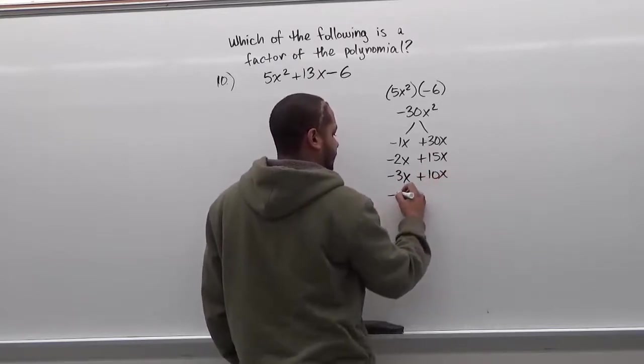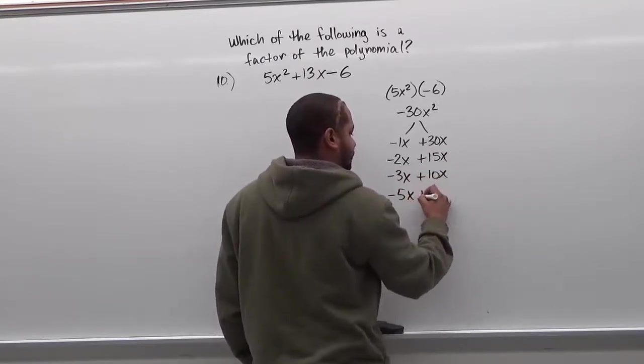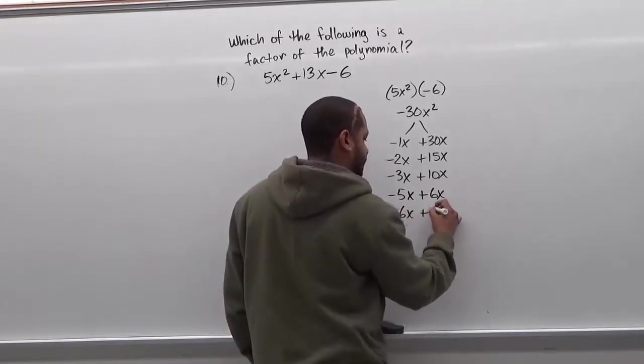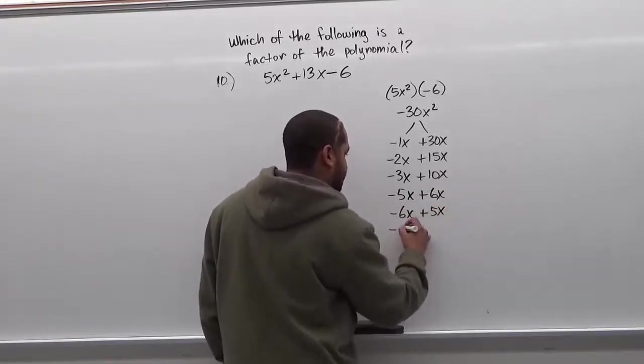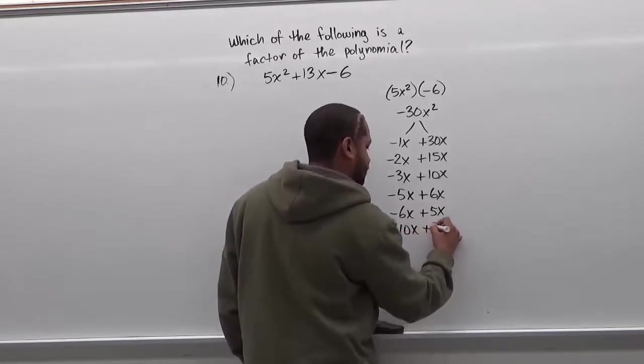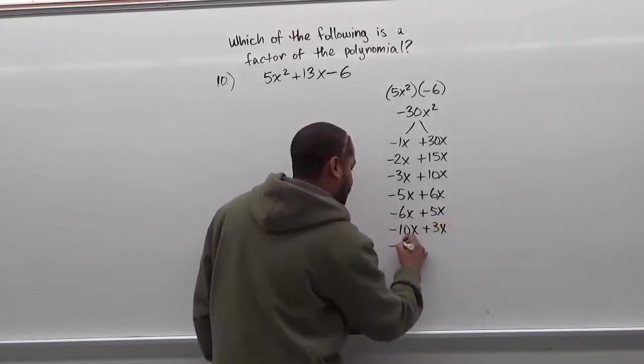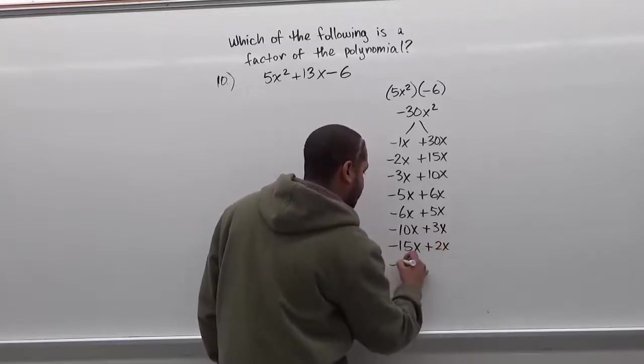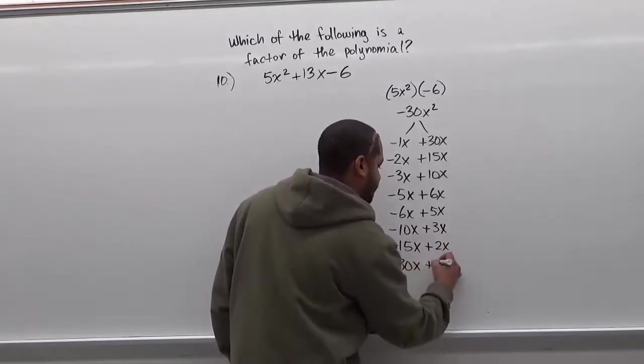Then we have negative 5x plus 6x, negative 6x plus 5x, negative 10x plus 3x, negative 15x plus 2x, and finally negative 30x plus 1x.